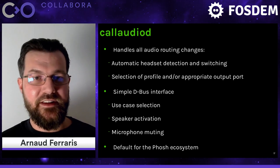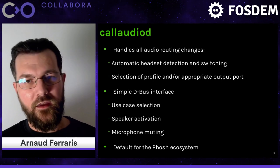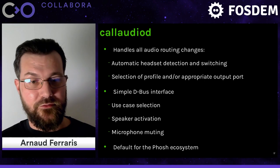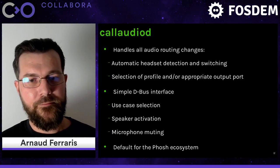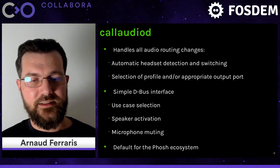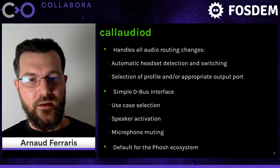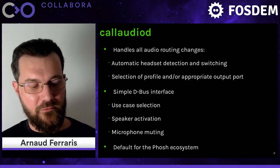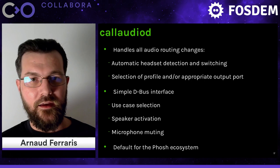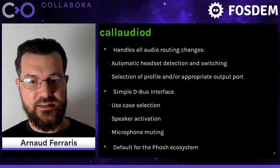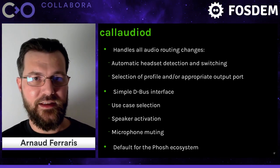So we came up with callaudiod — not a very original name, but it basically handles all the audio routing changes and provides a simple D-Bus interface for doing so. It doesn't do much automatically — only headset detection and switching. All other changes, such as selecting the audio routing use case, enabling the speaker, or muting the microphone during a call, must originate from another piece of software via the D-Bus interface, and callaudiod will act on the request. Callaudiod has been integrated into the Phosh ecosystem — it actually originated from discussions with Purism developers — and is now the default for any Phosh-based mobile distribution.